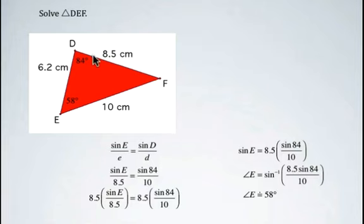So now we have two of our three angle measures. We can just make use of the fact that the sum of the interior angles of a triangle is 180 degrees. So angle F is 180 minus 84 minus 58, which is 38 degrees.